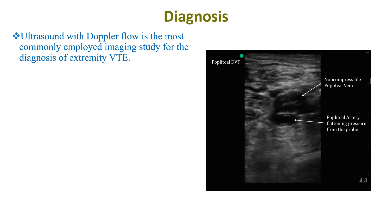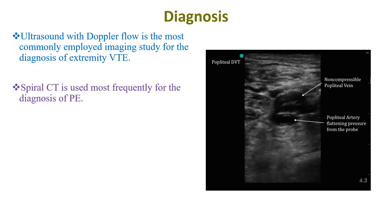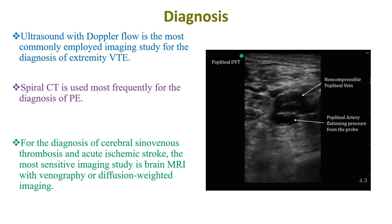Regarding diagnosis, ultrasound with Doppler flow is the most commonly employed imaging study for extremity venous thrombosis. Spiral CT is used most frequently for the diagnosis of pulmonary embolism. For cerebral sinovenous thrombosis and acute ischemic stroke, the most sensitive imaging study is brain MRI with venography or diffusion-weighted imaging.